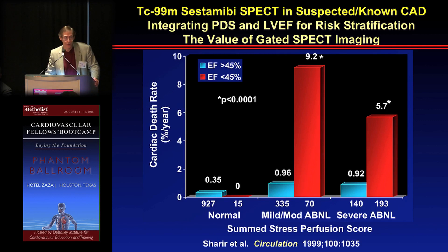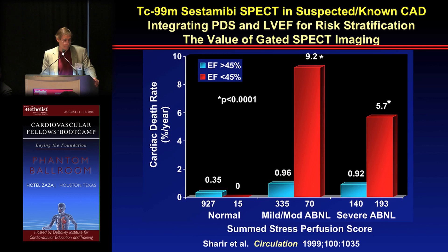Ejection fraction is also an important determinant of outcome and fits nicely with perfusion results. Looking at normal perfusion, mild to moderate, or severe abnormalities — and comparing patients with EF greater than 45% versus less than 45% — in a normal patient the EF doesn't matter much for outcome. But in intermediate-risk patients, ejection fraction clearly picks up a low and high-risk group, and the same holds for those with severe abnormalities. So ejection fraction helps very much in this regard.